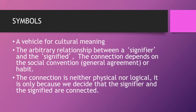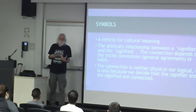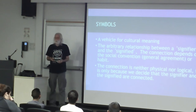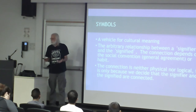A symbol is a vehicle for conveying meaning. We have two pieces: we have the signifier, which is the symbol — it's the signifier because it does the signifying — and then we have the signified, which is what the symbol represents. There is no specific inherent connection between the symbol and its meaning. For example, an eight-sided piece of metal painted red has nothing to do with the word 'stop,' other than we've used that symbol to tell people to stop. It's completely arbitrary.